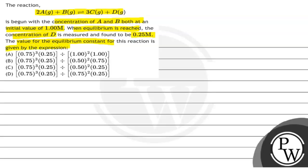Options में हमें different expressions provided हैं, जिसमें से हमें find out करना है कि अगर ये reaction 2A plus B gives 3C plus D है, इसमें initial concentration A and B का 1 molar है and equilibrium concentration हमें provided है D का which is 0.25. तो इसके लिए हमें equilibrium constant find out करना है.